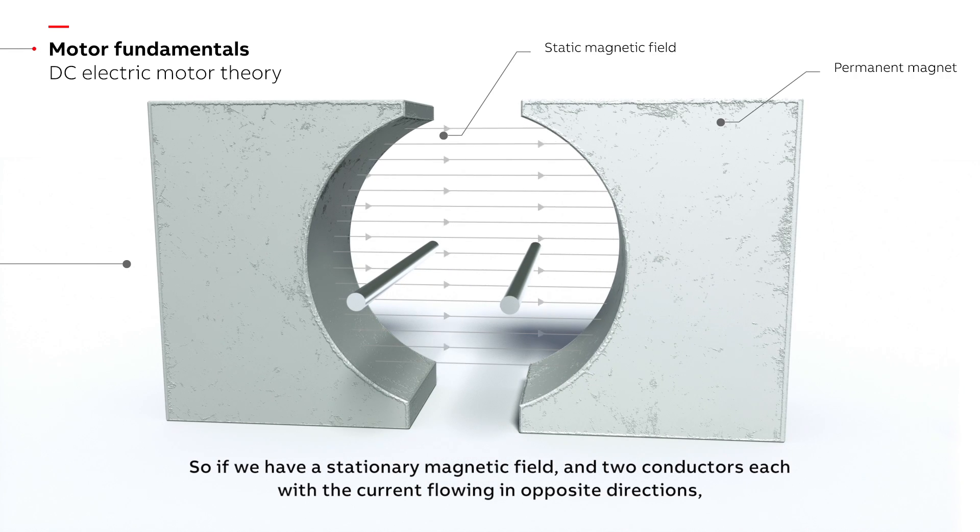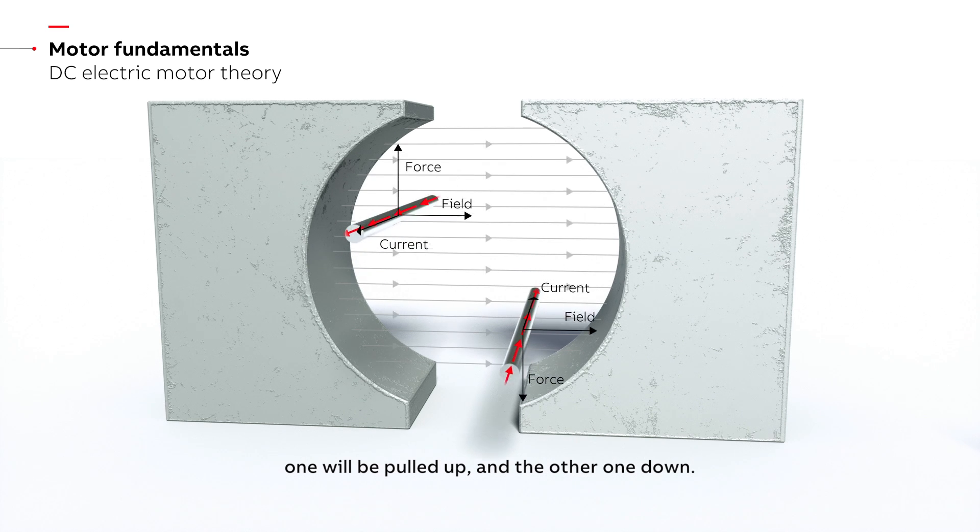So, if we have a stationary magnetic field and two conductors each with the current flowing in opposite directions, one will be pulled up and the other one down.